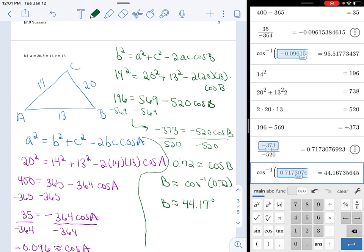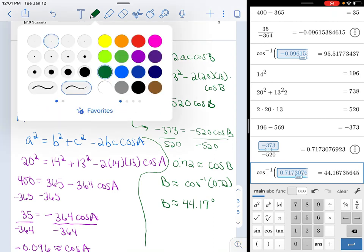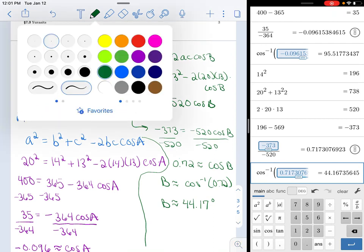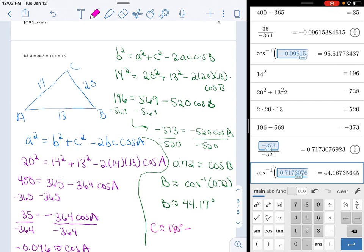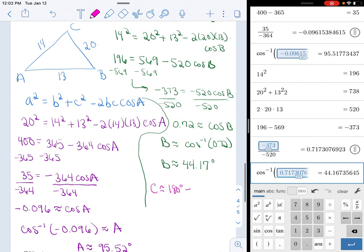And what we can do to solve for that last angle is the fact that our triangle has to add up to 180. So our last angle is C. 180 degrees take away that first one we found, which is 95.52 degrees, take away 44.17 degrees.